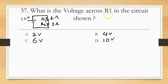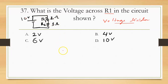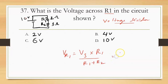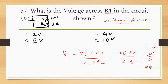Next: what is the voltage across resistance R1 in the circuit shown? This is a voltage divider circuit. Supply voltage is 10 volts. R1 = 2 ohms, R2 = 3 ohms. The formula is: voltage across R1 = supply voltage × R1 / (R1 + R2) = 10 × 2 / (2 + 3) = 20 / 5 = 4 volts across resistance R1. So the correct answer is 4 volts.